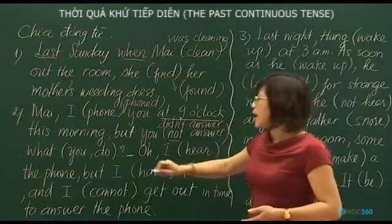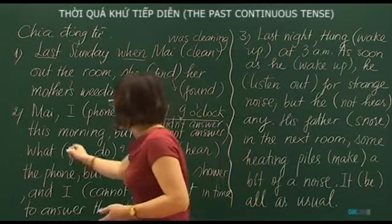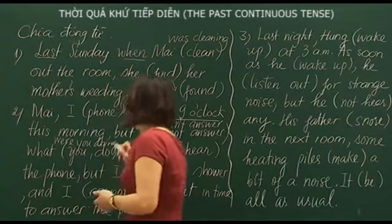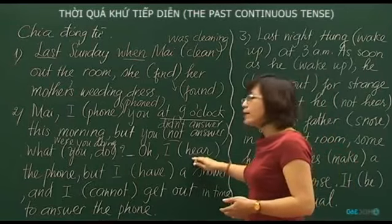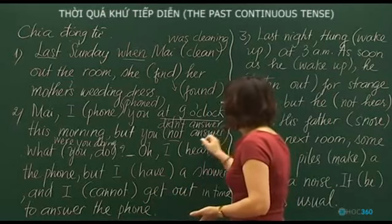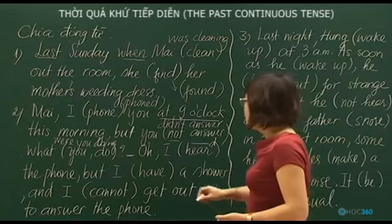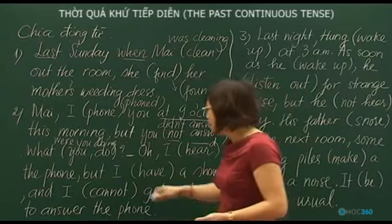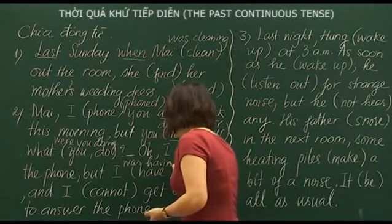At 9am what were you doing? We use past continuous for the ongoing action: 'What were you doing?' 'Oh, I heard the phone' — hearing is a short action, so simple past: 'Well, I heard the phone.' 'But I was having a shower' — the showering action is long, so past continuous: 'I was having a shower.'